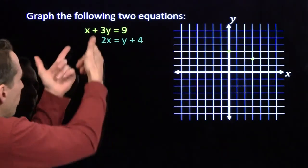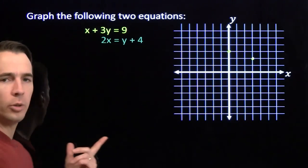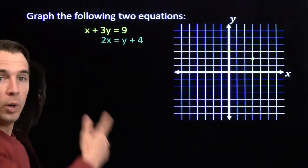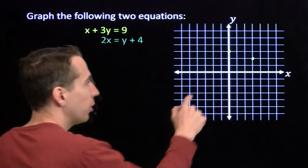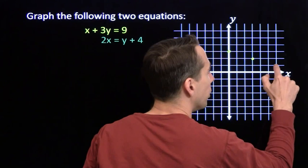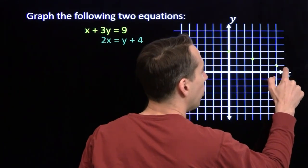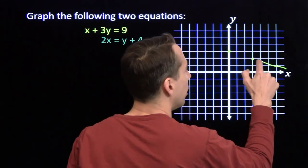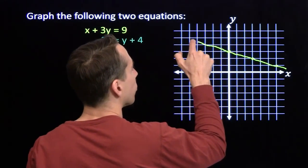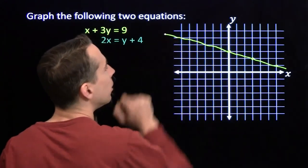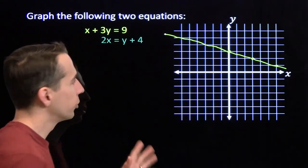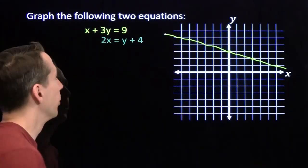Just to be safe, maybe I'll find one more. I put in x equals 6, y's got to be 1 — that gives me 6 plus 3 — the point (6, 1) is on the graph, and now we have our yellow line. It's not the straightest line I've ever drawn, but it'll do.